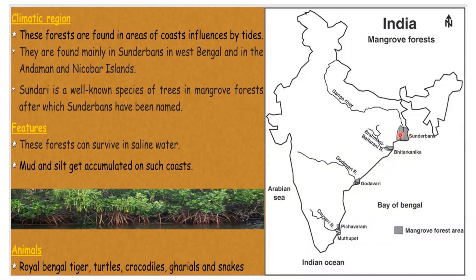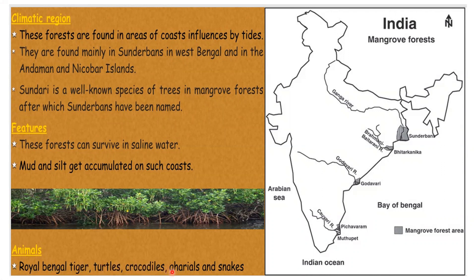In this map you can see Sundarbans, the largest mangrove forest or delta of the world. Mahanadi delta has Bhitarkanika forest, and mangrove forests are also found in Godavari and Kaveri deltas. These forests are found on coasts influenced by tides, mainly in Sundarbans in West Bengal and in Andaman and Nicobar Islands. Sundari is a well-known species of tree in mangrove forests, after which Sundarbans has been named. These forests can survive in saline water. Mud and silt get accumulated on such coasts. Royal Bengal tiger, turtles, crocodiles, gharials, and snakes are found in these areas.